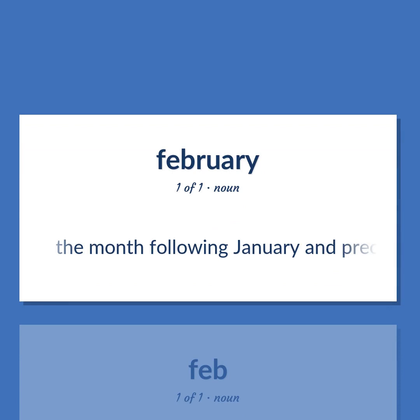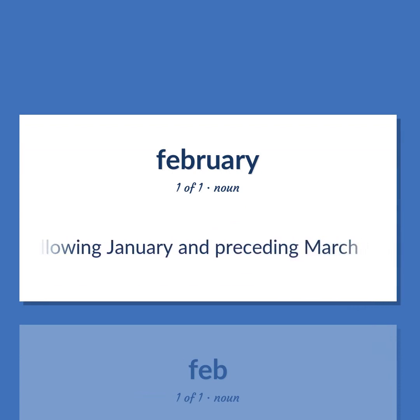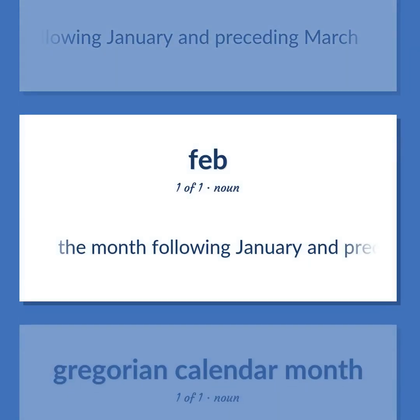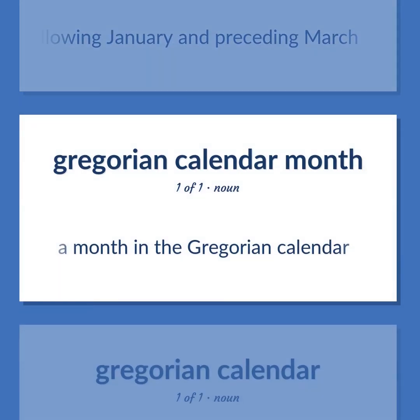February: the month following January and preceding March. A month in the Gregorian Calendar.